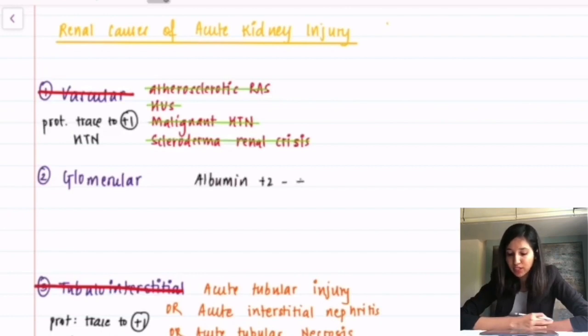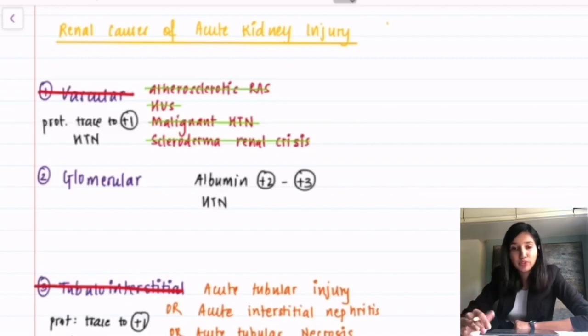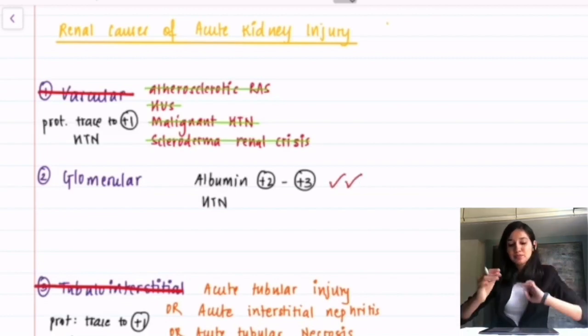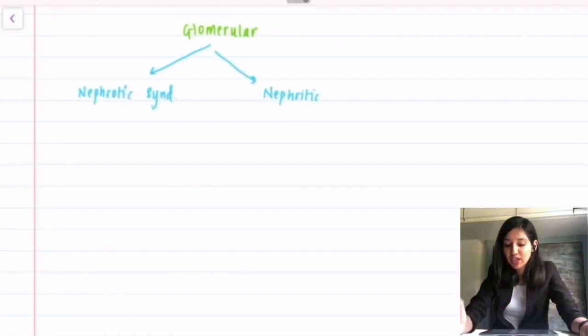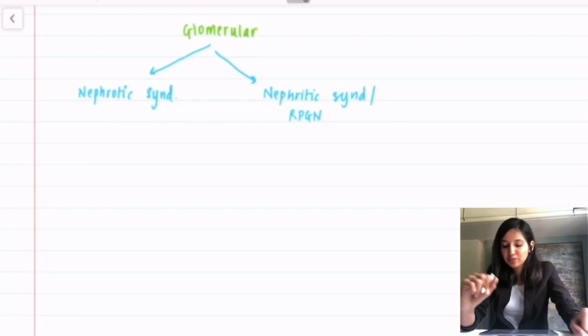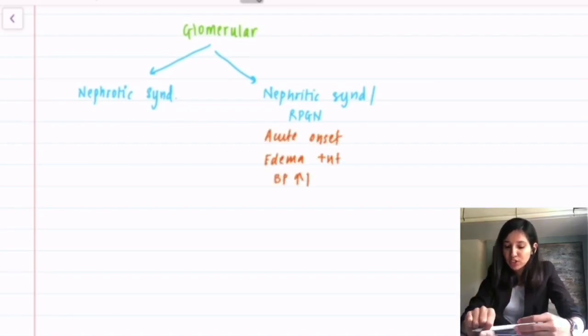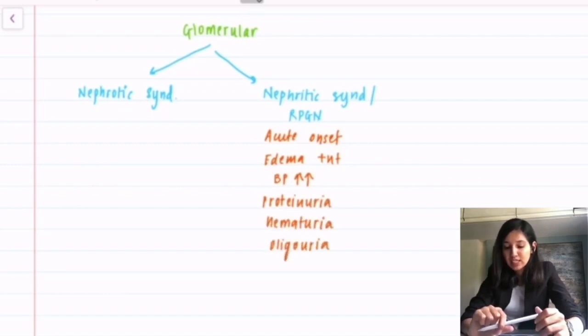Albumin plus 2 to plus 3 with presence of hypertension most likely corresponds to glomerular cause. Now, let's see what are the glomerular causes. We have two classic presentations that is nephrotic syndrome and nephritic syndrome or RPGN. Acute onset, presence of edema, raised blood pressure, proteinuria, hematuria and oliguria highly suggest that our patient can have nephritic syndrome or RPGN.